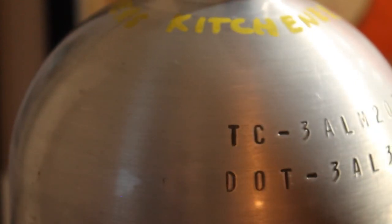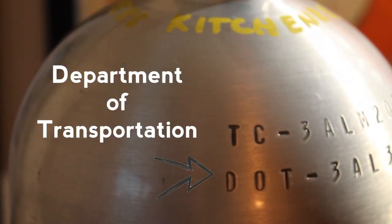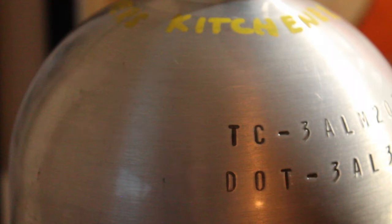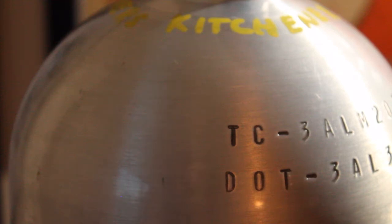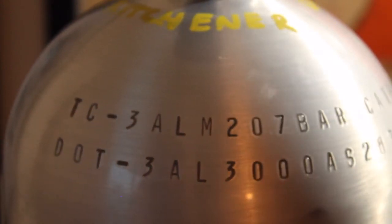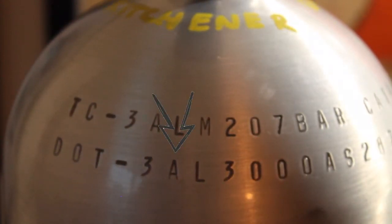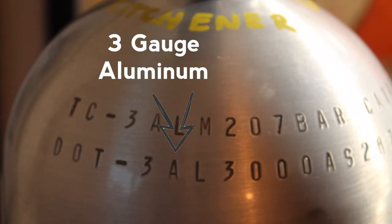Now under TC, we have a DOT and the DOT stands for Department of Transportation. This is the U.S. regulatory authority or the United States of America's agency that dictates that this tank is indeed safe to be filled, to be transported, to be used within the U.S. So that just is for our neighbors to the south. Then we have a little dash to separate the next bit of information, and then we have the three aluminum information again. So this tells us again, our tank is a three gauge aluminum cylinder.